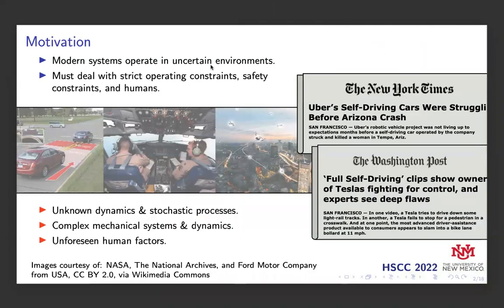Modern dynamical systems operate in uncertain environments, and the uncertainty can come from several places, including intrinsic uncertainty from model uncertainty or complex mechanics, or from extrinsic uncertainty from the environment. These systems need to deal with uncertainty to obey strict operating constraints, safety constraints, and unforeseen human factors. For instance, we may be considering autonomous or assistive driving scenarios, aircraft takeoff and landing, or urban air mobility where we have UAVs operating in dense urban areas.